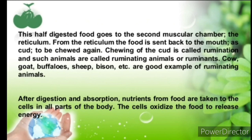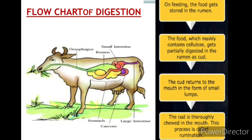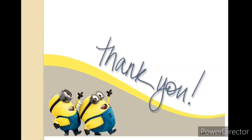Cow, goat, buffalo, and sheep are good examples of ruminants. After digestion and absorption, nutrients from the food are taken to the cells in all parts of the body. According to the flow chart: on feeding, food gets stored in the rumen; the food, which mainly contains cellulose, gets partially digested in the rumen; it returns to the mouth as curd in small lumps; and the curd is thoroughly chewed in the mouth — this process is called rumination.